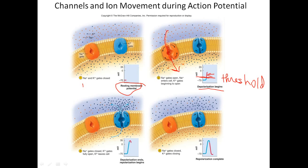Once we hit about zero, or around positive 35, the sodium voltage-gated channels close — no sodium is going anywhere. But the potassium channels are now fully open, so potassium exits the cell, making the inside more negative because positive charges are leaving — and that's repolarization.